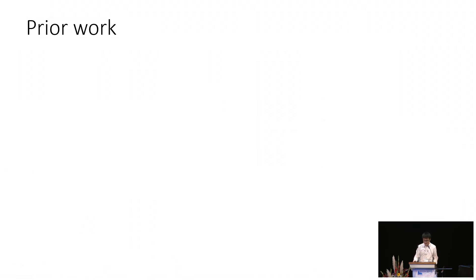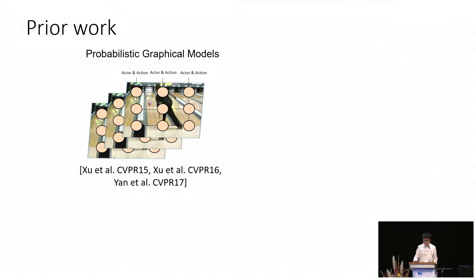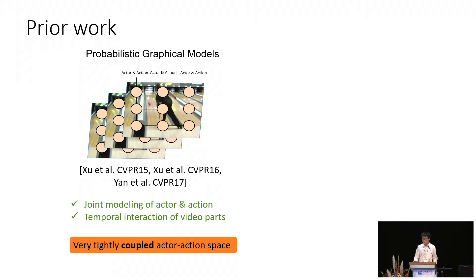The prior work on the actor action semantic segmentation task can be classified into two categories. In the first group are approaches based on probabilistic graphical models. These graphical model methods treat every pixel in the video as a node in a graph and develop a probabilistic prediction of actor and action labels on each node. There are several pros of this method. They've been doing joint modeling of actor and action, and they have modeled temporal interactions of different video parts. Still, it has some limitations. Unfortunately, the actor and action tasks are very tightly coupled in a single joint actor action product space. This makes transferring to new action categories difficult.